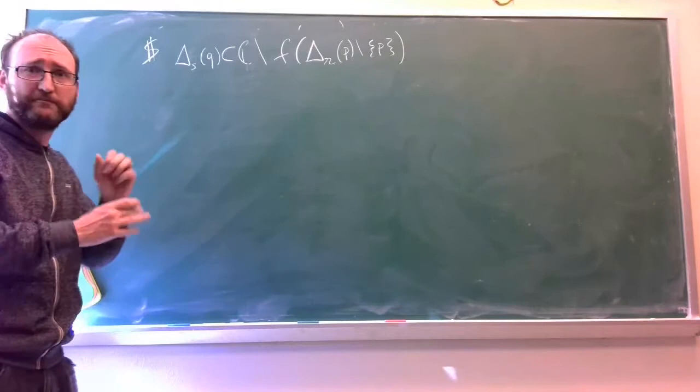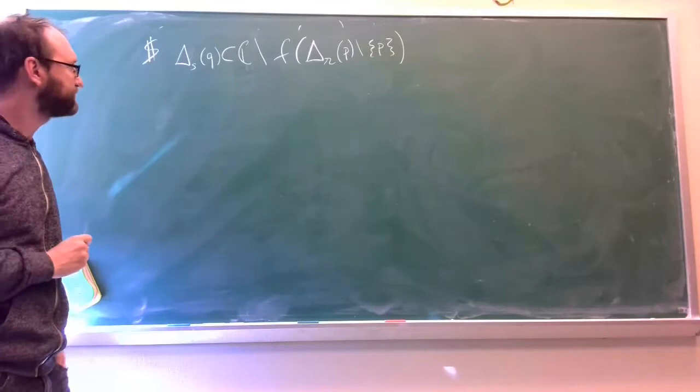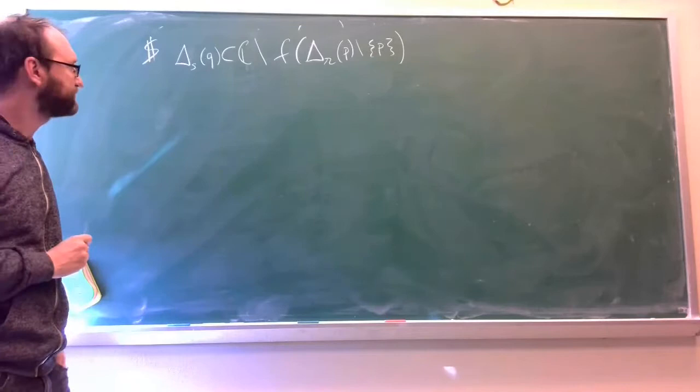No matter how small, maybe it fills up everything else, but there's some tiny disk of radius ε that it misses. Well, let's look at the function g(z).